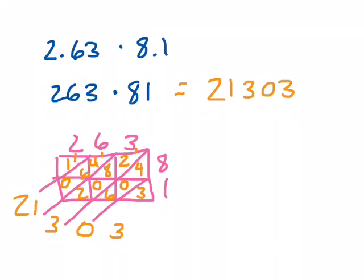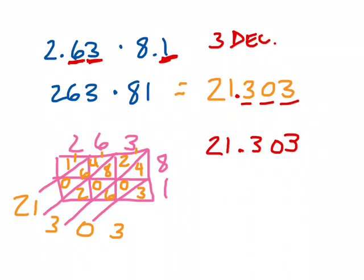So my first number, 2.63, has a tenths place and a hundredths place. That's two places. My next number has just a tenths place. That's one place in the decimal. And that's a grand total of three decimal places. Meaning that my answer should also have three decimal places. So I'll start counting from the right. One, two, three. And I'll place my decimal. So my real answer here is 21.303.